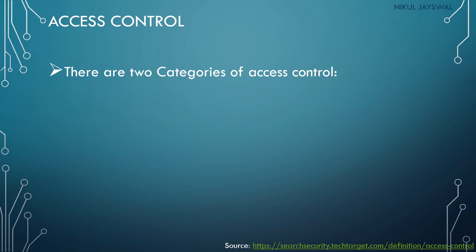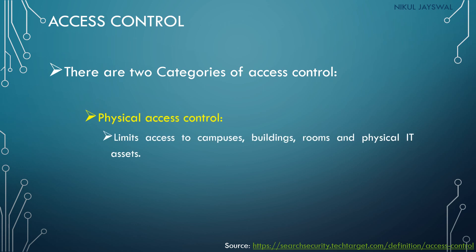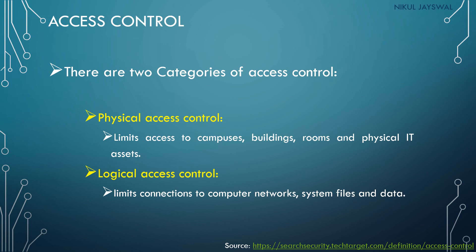There are two categories of access control. First is physical access control, which provides authentication and authorization toward physical resources such as buildings, rooms, and physical IT assets. Second is logical access control, which provides authentication and authorization toward logical entities — files and records stored in computer systems. Logical access control is typically managed by software or the operating system.